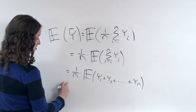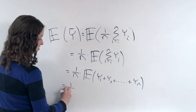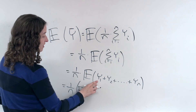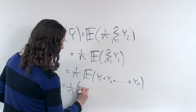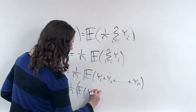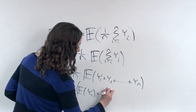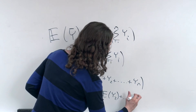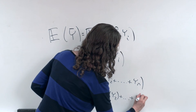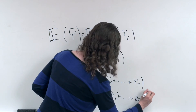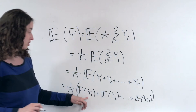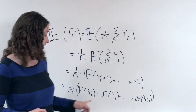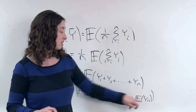And we know that the expected value of this sum is the same as the sum of the expected values. And that turns out to be true even if these values — even if these heights, for example — are not sampled independently. This will always be true: the mean of a bunch of things added together is the same as the sum of their means.